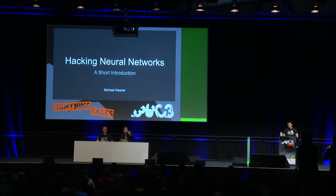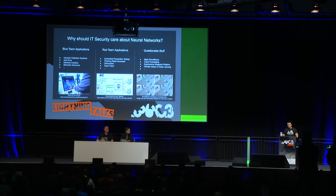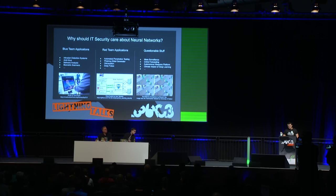Hi, my name is Michael and I'm working on a small open source course on how to hack into neural networks. Why should IT security care? There are many deep learning applications in blue team work such as antivirus and intrusion detection systems. Red teams also need to know how to hack into those systems and create their own — for example, automated penetration testing or phishing email generators. There are also questionable valid targets like mass surveillance and crime forecasting.